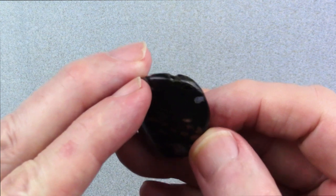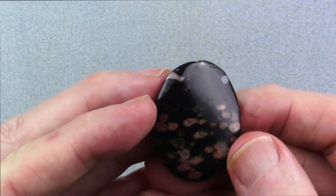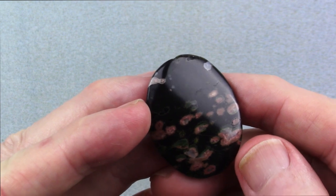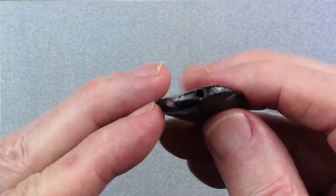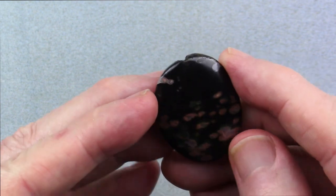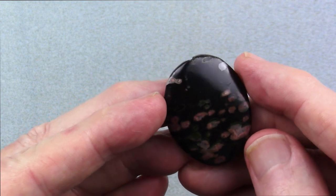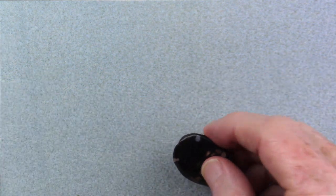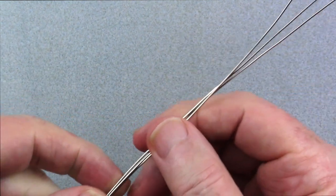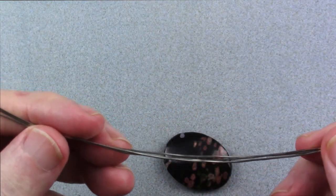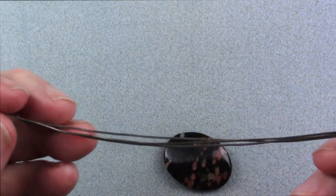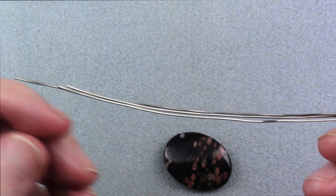Now the gemstone we're going to be using today is approximately 40 by 30 millimeter stone. This is a plum blossom jasper. It's drilled from top to bottom, relatively thick. And along with this stone, you're going to need 30 inches of 20 gauge wire. I'm using nickel silver today, and I've cut it into three 10 inch lengths.